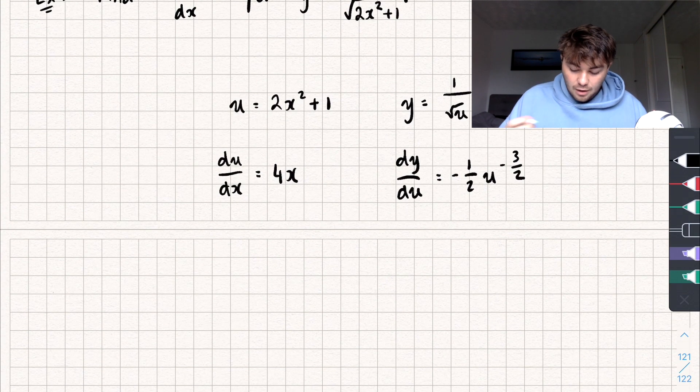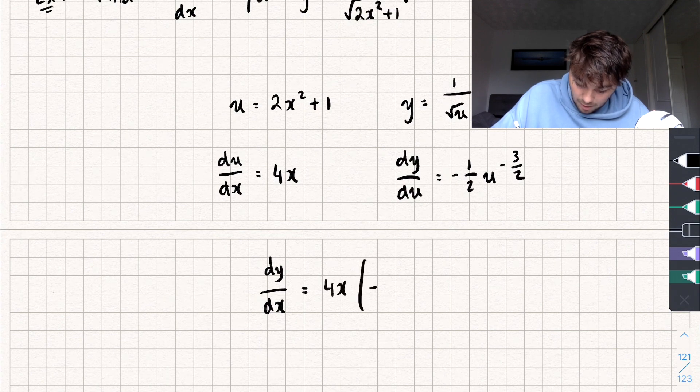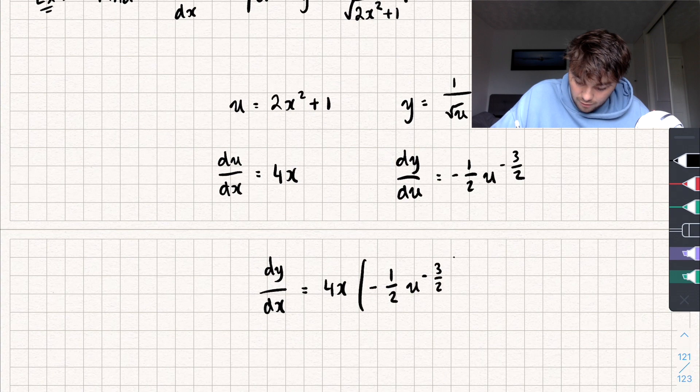So, we want dy by dx, and I find that by multiplying these two things together. So, we get dy by dx is equal to 4x multiplied by negative 1 half u to the negative 3 over 2, like this.